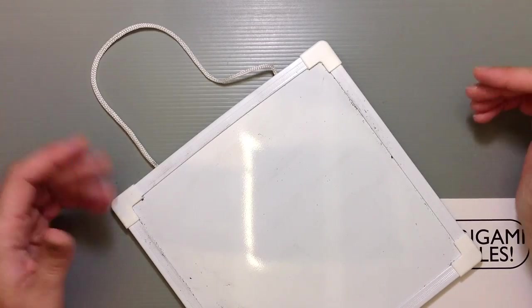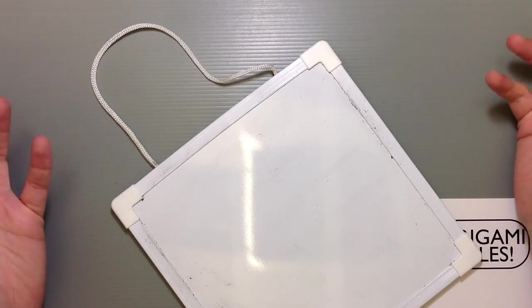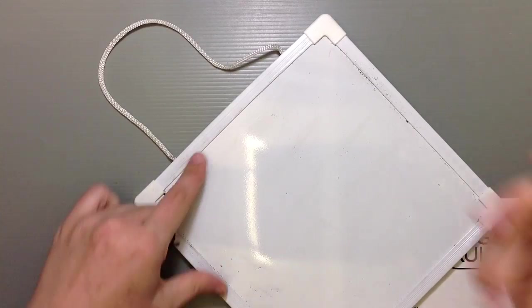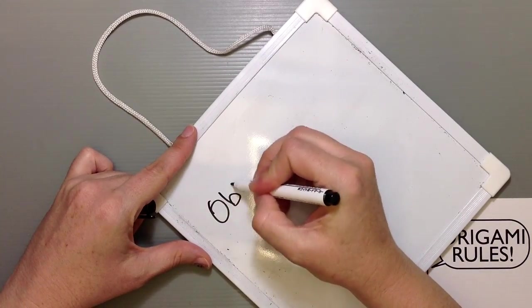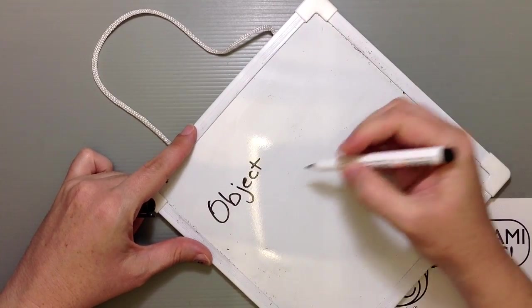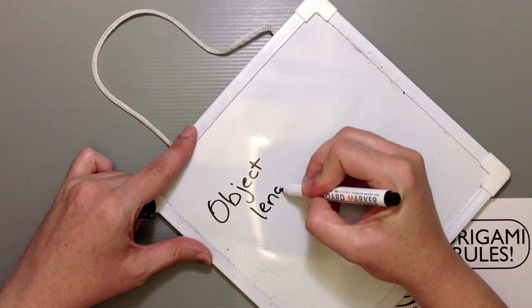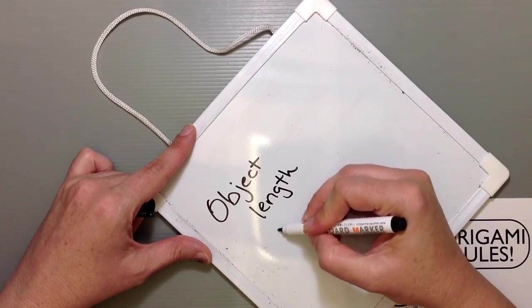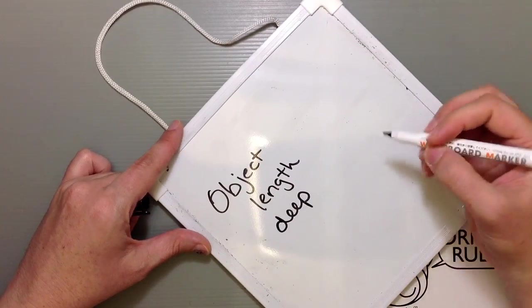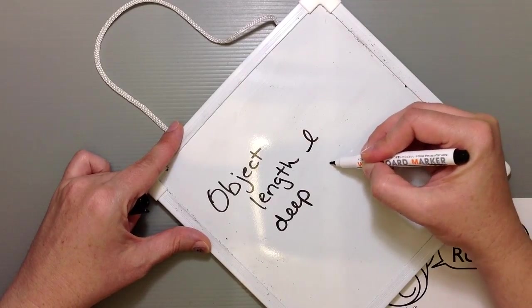The other approach is to try to make your bag the right size for what you're going to put in it. If you have your object in mind and you know how long it is, that's one thing to consider, and how deep it is. If you have both of those numbers, if this is L and this is D...